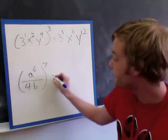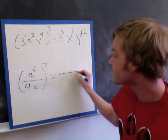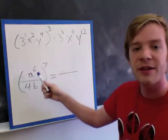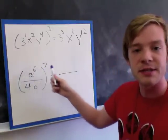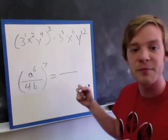So let's start on top. So if I have a to the power of 6 and I'm bringing in a power of 7, I need to multiply 6 times 7, which will give me a to the power of 42.